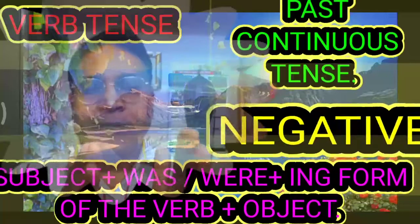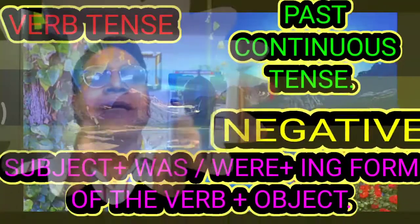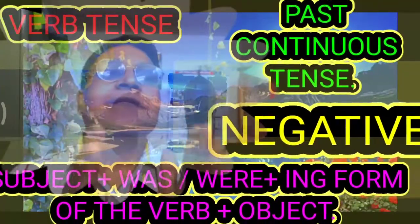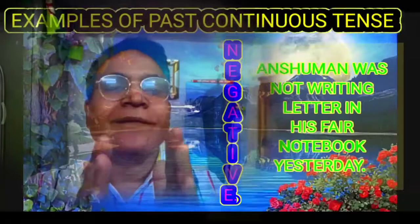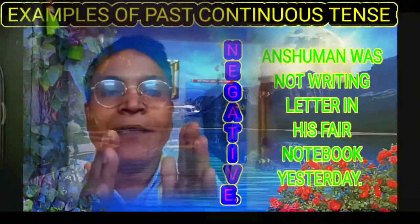Now we are going to discuss the negative form of past continuous tense. Its root formula is: subject plus was or were plus not plus ing form of verb plus object. We have to consider this sequence while understanding past continuous tense in negative form.